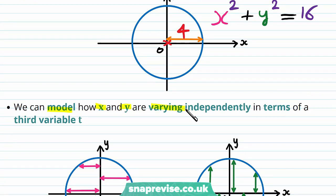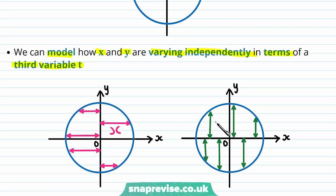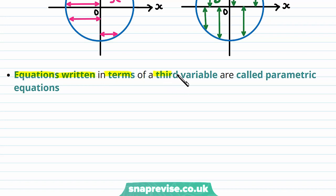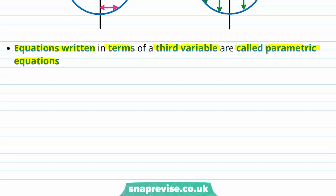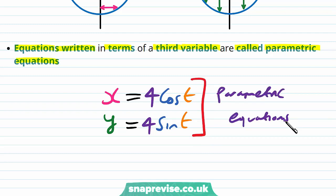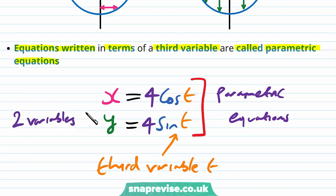We can model how x and y are varying independently in terms of a third variable t. We can consider the x and y values for different values of t, and directly look at x and y individually. Equations written in terms of a third variable are called parametric equations. The parametric equations corresponding to this situation are x is equal to 4 cosine of t and y is equal to 4 sine of t. We can see that x and y can be individually found in terms of the third variable t.